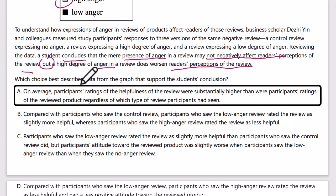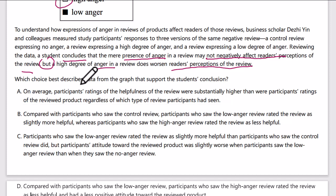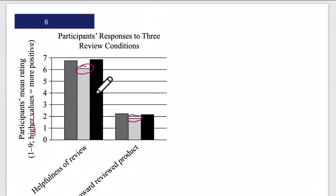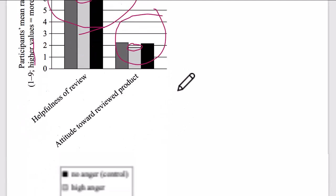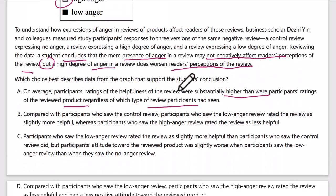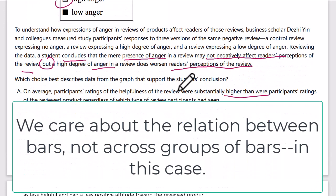Answer A says: on average, participants' ratings of the helpfulness of the review were substantially higher than participants' ratings of the reviewed product, regardless of which type of review they saw. This basically says one set of bars is higher than the other set. That's irrelevant — it says nothing about a high degree of anger's impact on the review. So it's accurate, but not relevant.